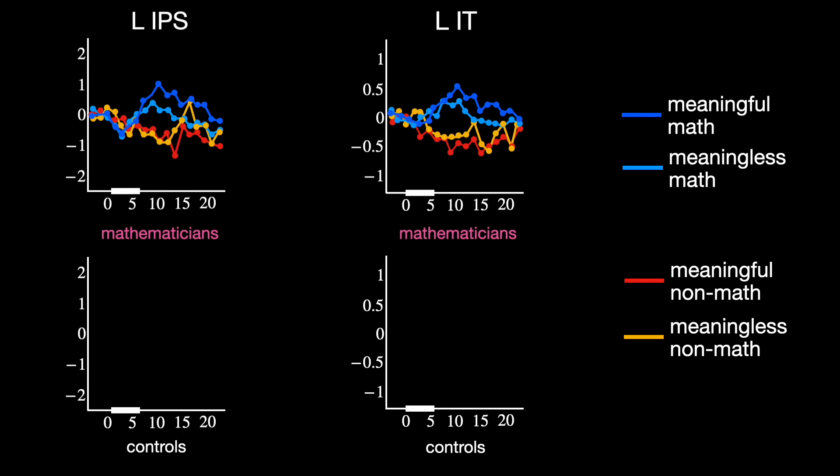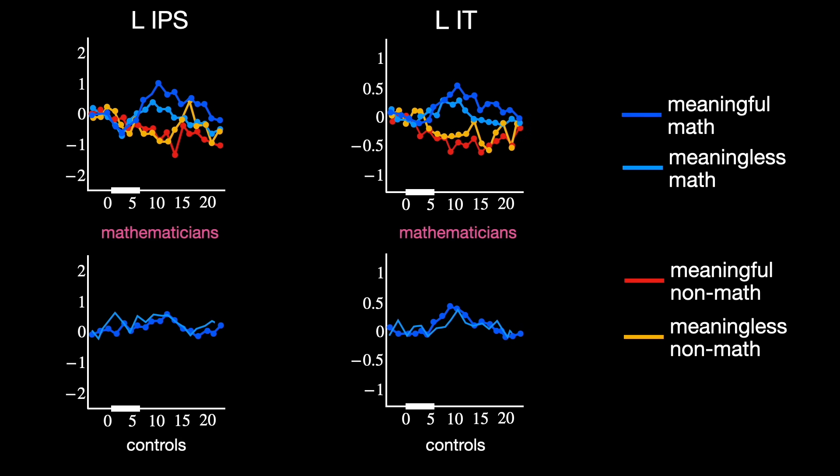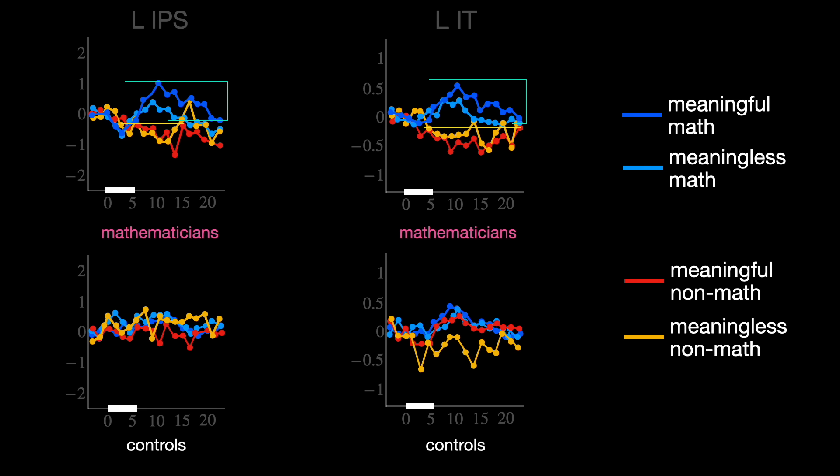For the control group, though, the pattern is completely different. Whether the statement is math, non-math, meaningful or meaningless, the same general semantic areas are used, and there is no sign of switching to a math-specific network.